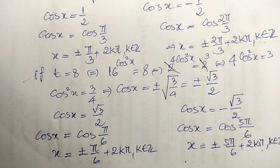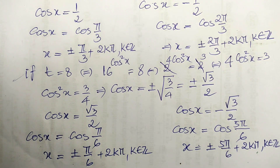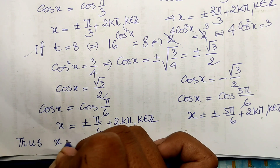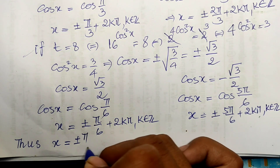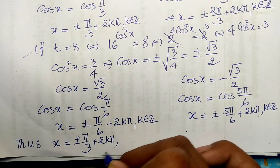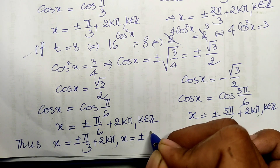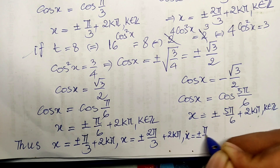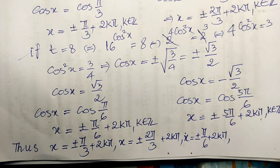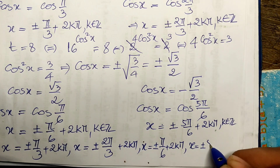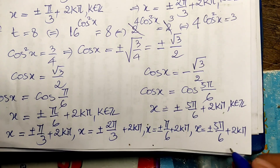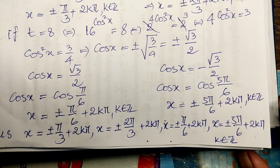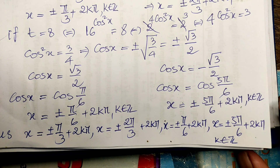So the complete solution set is: h equals plus or minus pi over 3 plus 2k pi, or h equals plus or minus 2 pi over 3 plus 2k pi, or h equals plus or minus pi over 6 plus 2k pi, or h equals plus or minus 5 pi over 6 plus 2k pi, where k is an integer. Thank you for watching — please subscribe to my channel for more exciting videos. Goodbye!